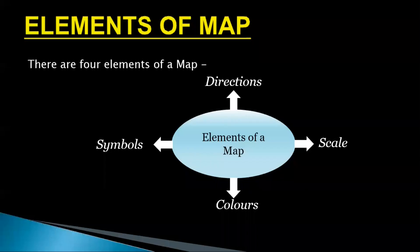Elements of Map. There are 4 elements of a Map. Number 1: Directions, Number 2: Scale, Number 3: Colors, and Number 4: Symbols.